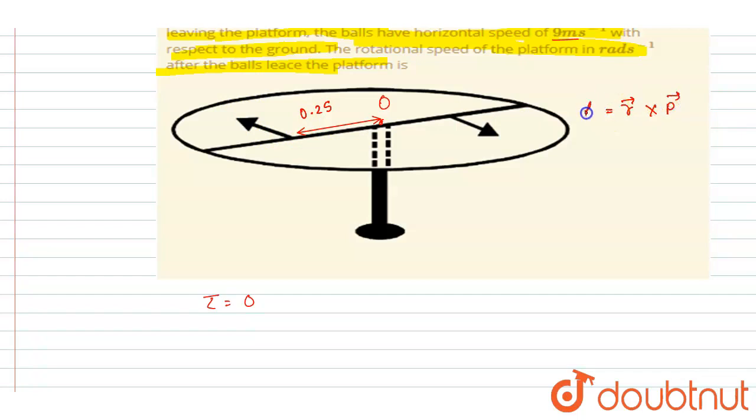L is the angular momentum vector. So r vector is this and p vector is in this direction, so r cross p is downward. R cross p is again downward for this also. So they both are producing angular momentum in downward direction.